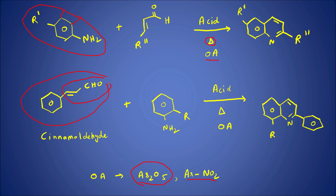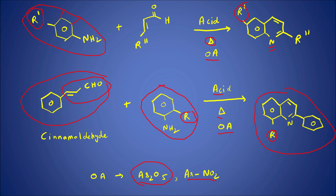From cinnamaldehyde we can make quinolines, because cinnamaldehyde is the alpha-beta unsaturated aldehyde required. This time I'm taking an ortho-substituted aniline, adding acid, heating, and using an oxidizing agent — generally arsenic acid or nitrobenzene — and what we get is a quinoline derivative. The R' group that was at the para position of aniline ends up para to the nitrogen in the quinoline; an R group at meta or ortho ends up meta or ortho to the nitrogen.